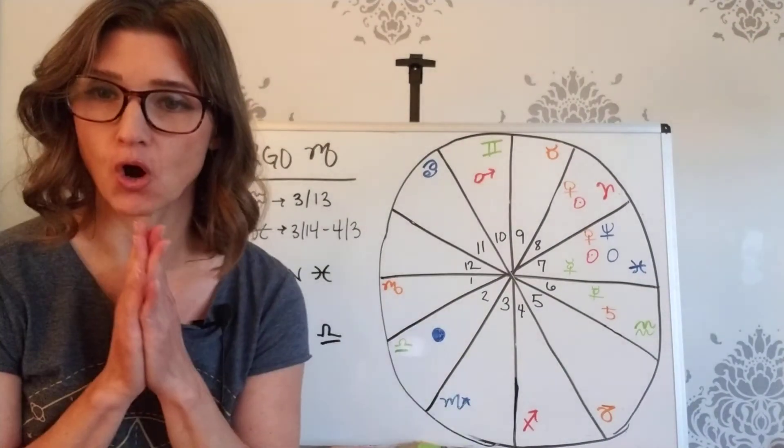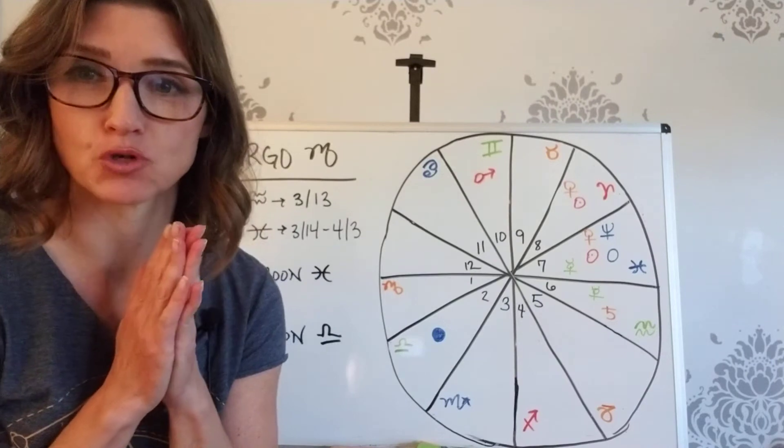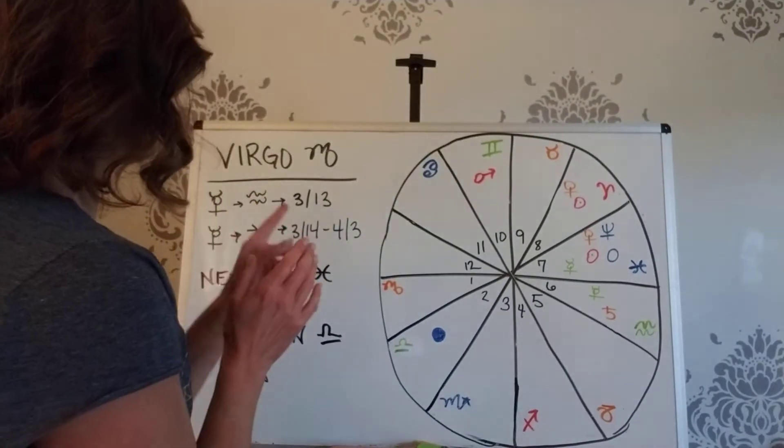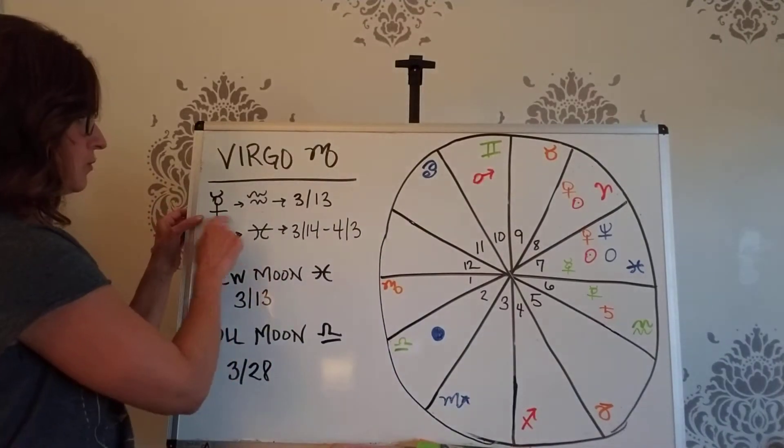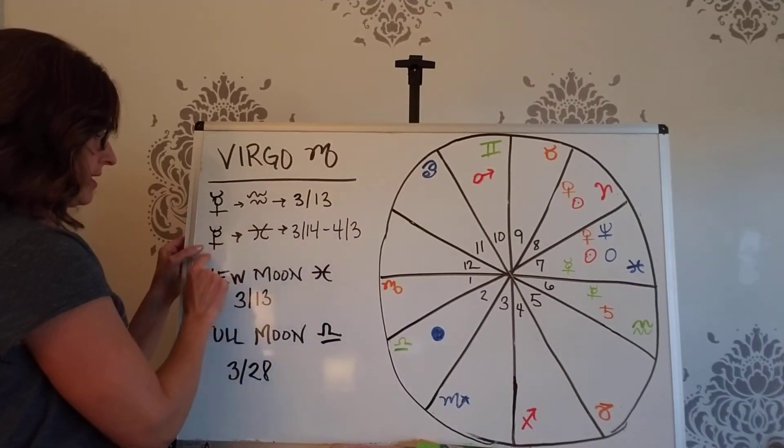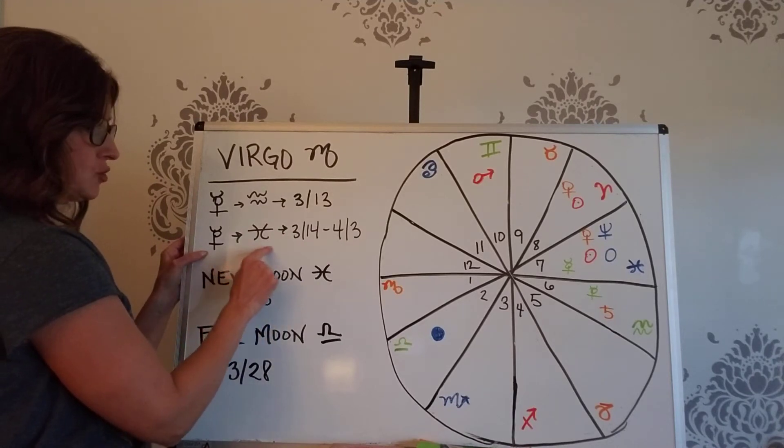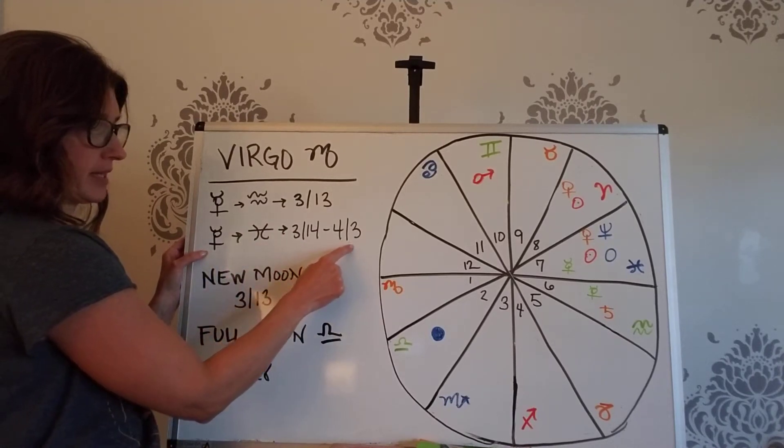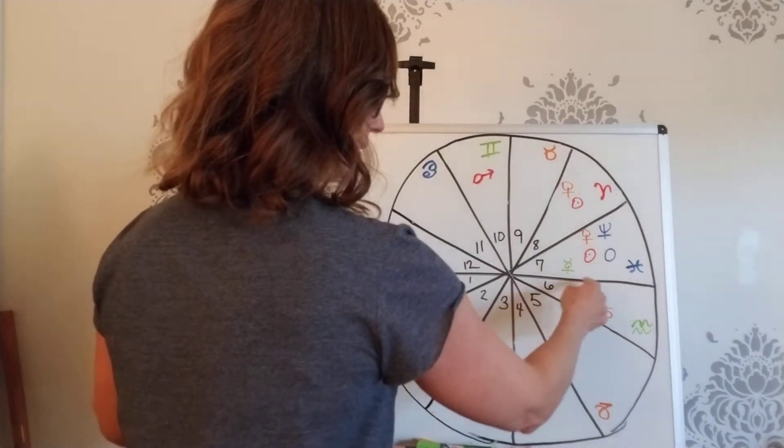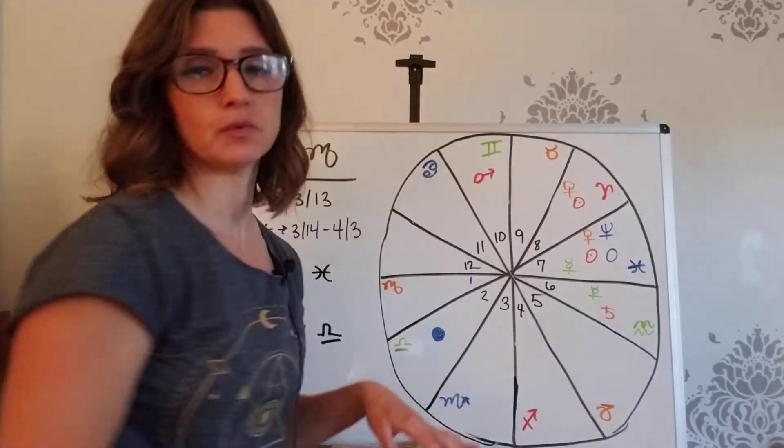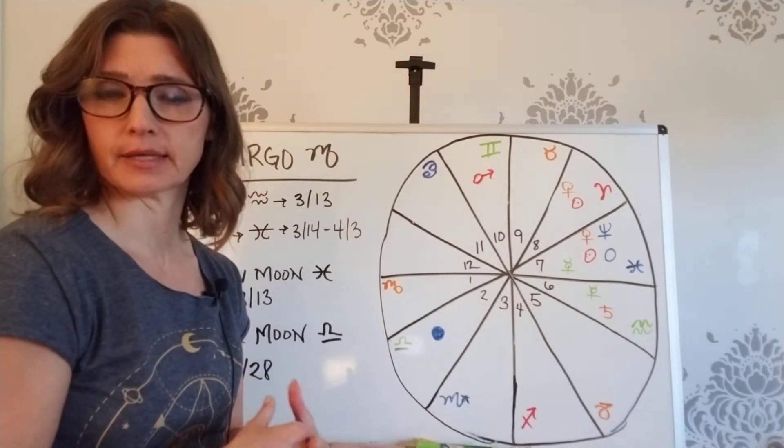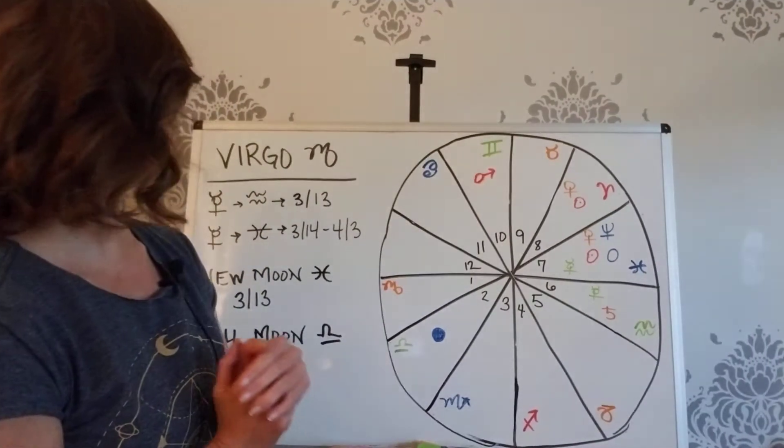Okay, so Virgo, all planets are in motion. This is a very good thing and your ruler Mercury will be in Aquarius until the 13th and then he will move into Pisces from the 14th to the beginning of April. So he was having you really rethink, reanalyze, review. This is for March.